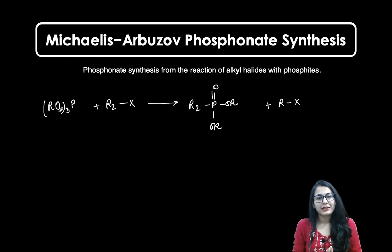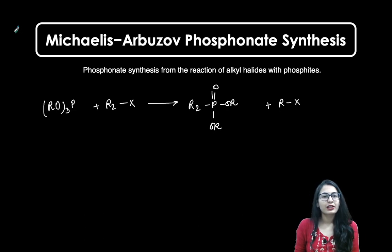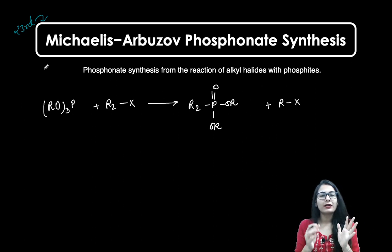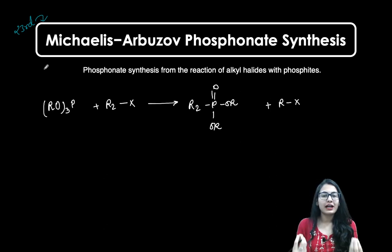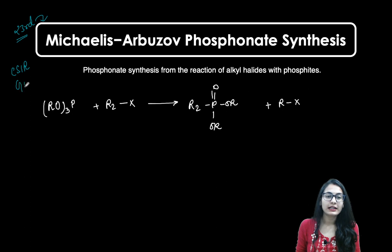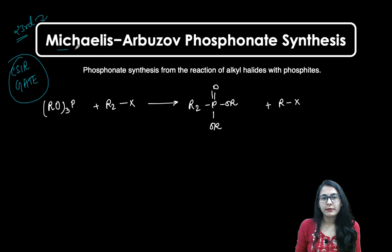Hello everyone, welcome to Rasayan Academy. This is our 23rd name reaction video. We are getting closer to 100 name reactions each and every day, and I hope that whatever hard work I am doing, you are also working equally hard to learn these name reactions. All of these are very important with respect to the CSIR NET exam and the GATE exam as well. So what are we talking about in today's session? It is Michaelis-Arbuzov Phosphonate Ester Synthesis.